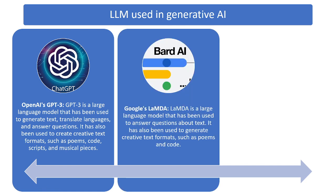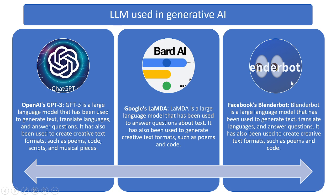Google also has a large language model called LaMDA — Language Model for Dialogue Applications. LaMDA does the same things that GPT-3 and GPT-4 can do, and it is now known as Google Bard. The underlying model they use is the LaMDA LLM model.